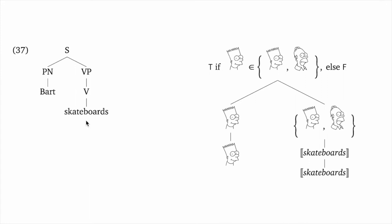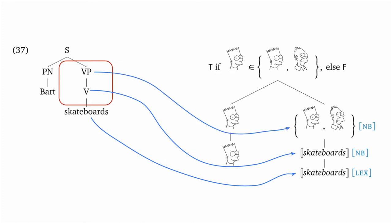So we start with the meaning of skateboards. Rule lex says look it up and rule NB tells us how to handle this non-branching structure here. The non-branching structure matches the rule's syntactic template and this tells us what to do meaning-wise. In the syntax we have one more non-branching structure here so we again use rule NB and rule lex. And here to reveal more of what's happening I unpack the meaning of skateboard into a set. So we're operating under the assumption that the skateboarders are just Bart and Homer.